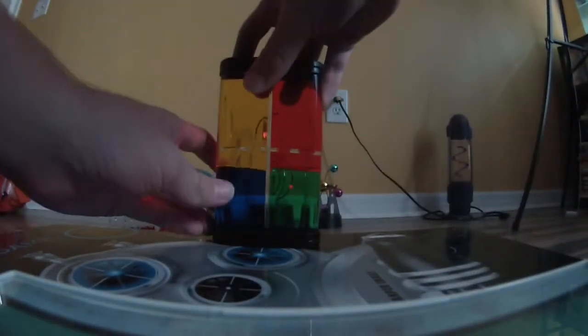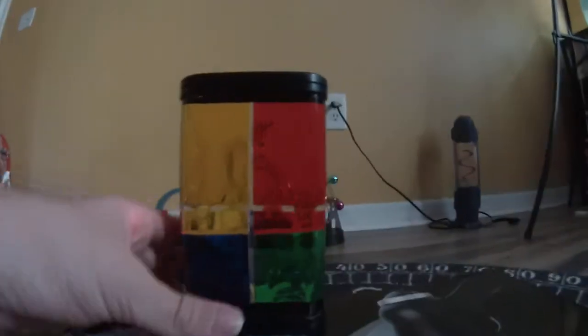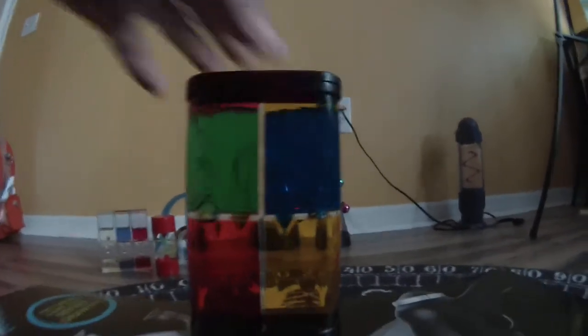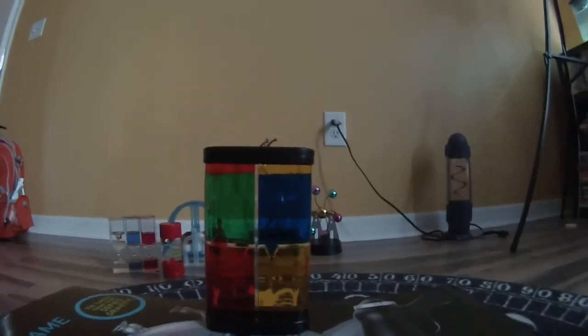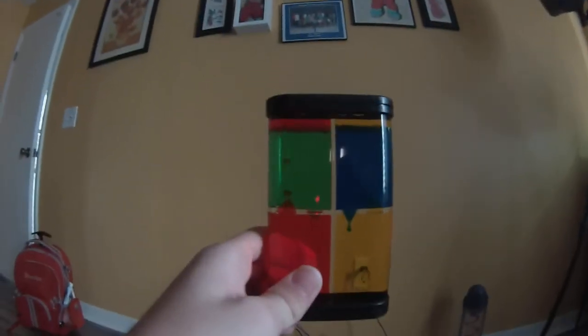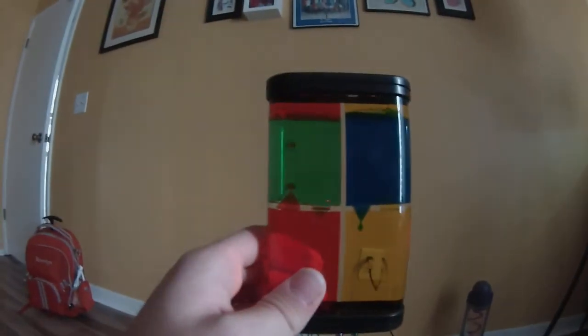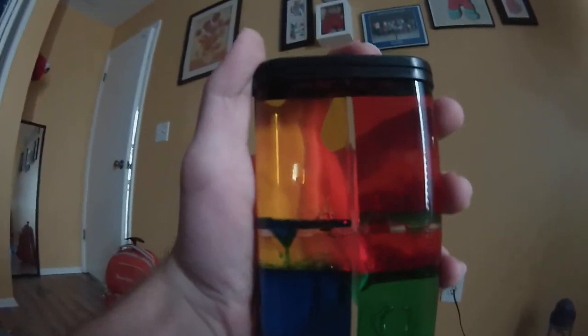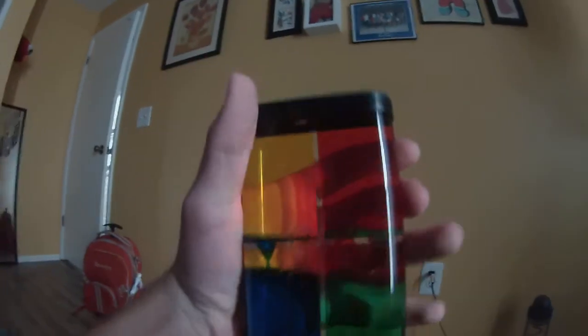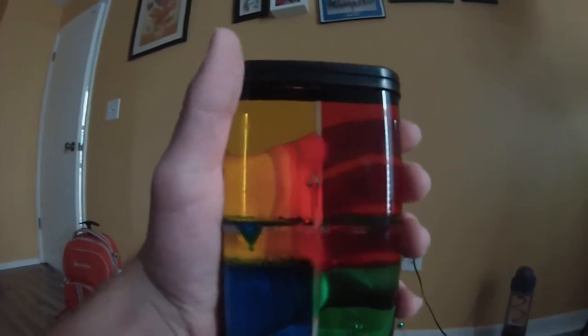Next we have another liquid motion toy: the four color box by Westminster Inc. This is pretty cool. Blue liquid goes down the bottom, green liquid goes down the bottom, red liquid goes up, yellow liquid goes up. That's how it goes. This is very fun to play with. I love it a lot. Again, I just love holding this, just like the spiral timer. It's really fun to hold.